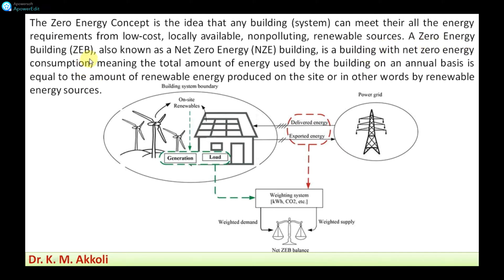A zero energy building, also known as a net zero energy building, is a building with net zero energy consumption. This means the total amount of energy used by the building on an annual basis is equal to the amount of renewable energy produced on-site by renewable energy sources. Many domestic and educational institutions are now producing their own energy and using it for their needs. If excess energy is produced it is supplied to the grid, and if any additional energy is needed it is taken from the grid. This self-sufficiency in energy is the core concept, and that trend is growing nowadays.